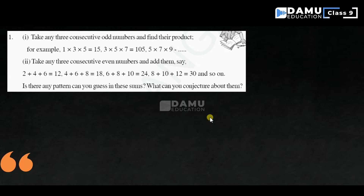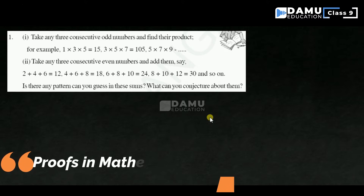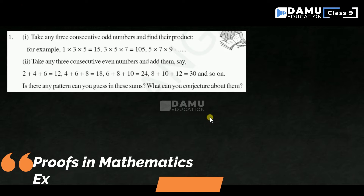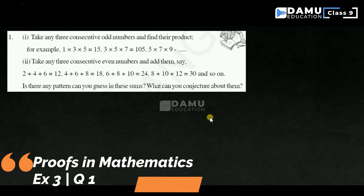So, in this module, we are going to start our next exercise, that is, the first question. What is that? Take any three consecutive odd numbers and find their product. So, what is the first consecutive odd numbers? For example, 1 into 3 into 5.